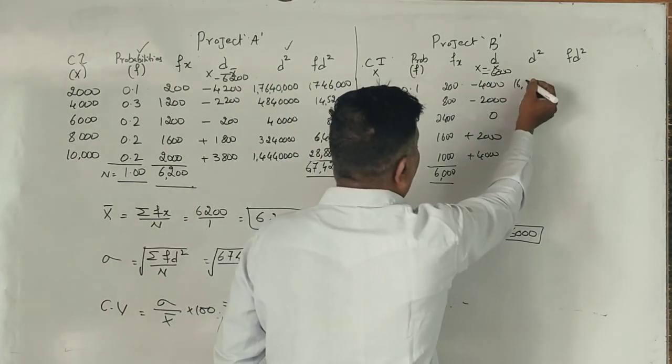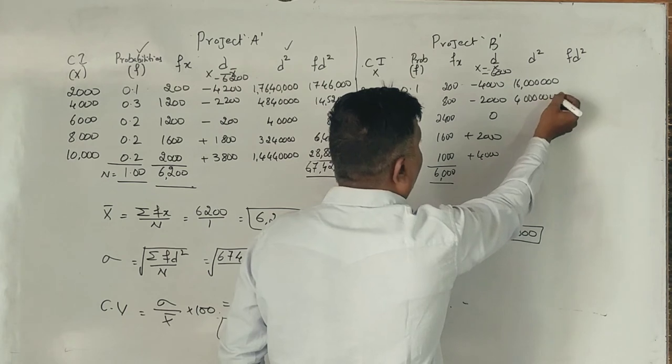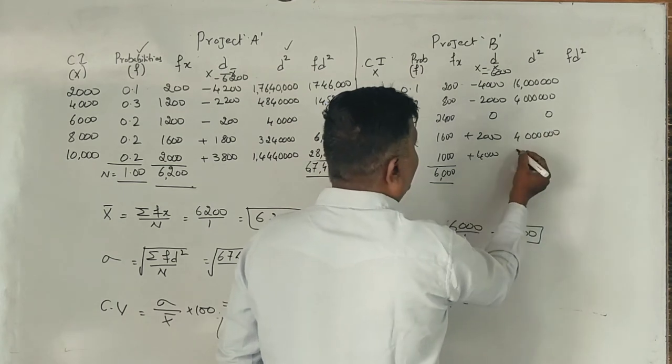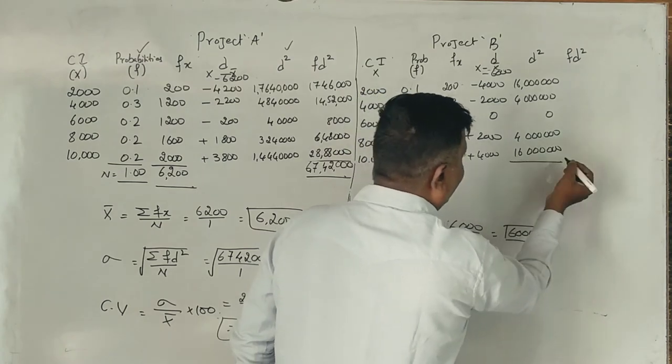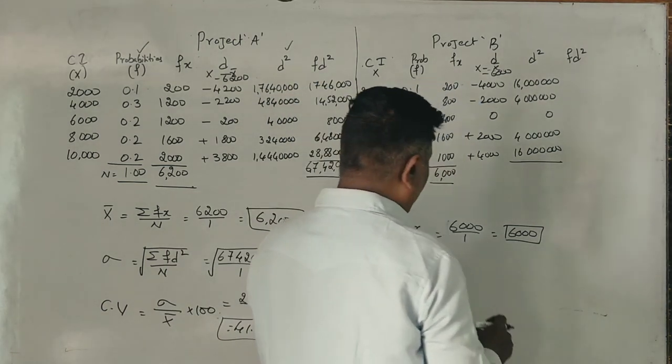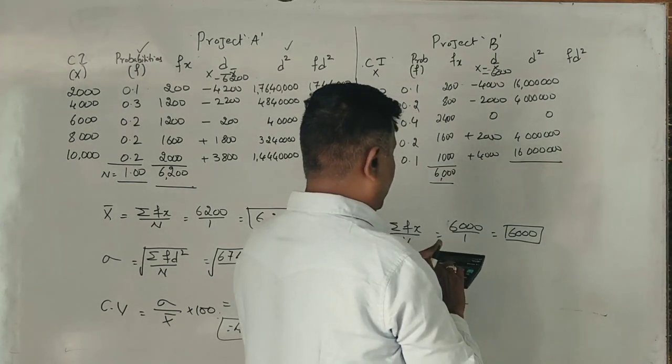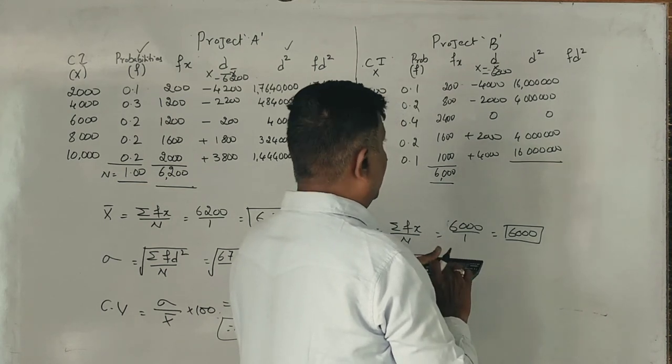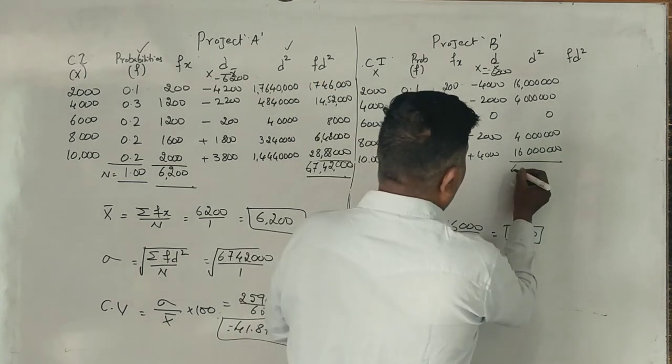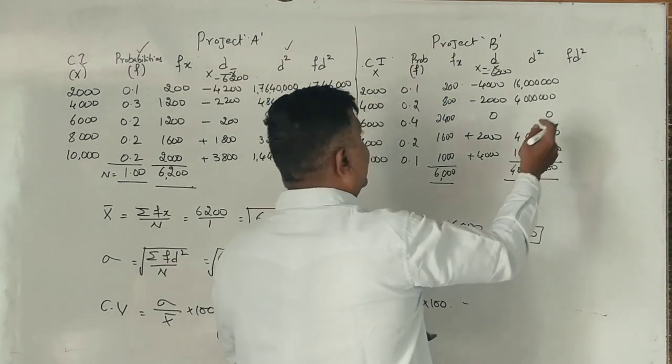4,000 squared is 16 with six zeros. 2 squared is 4 with six zeros. Total: 16 lakhs plus 16 lakhs is 32 lakhs, then 160 lakhs, 320 lakhs.